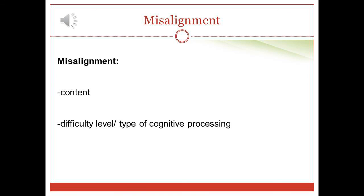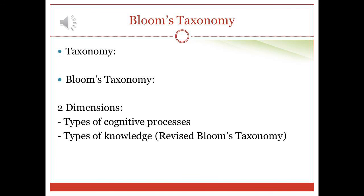Misalignment is the lack of congruence between learning objectives, instructional experiences, and assessment. Misalignment can occur both in the content addressed and in the difficulty level or the type of cognitive processing required for completing a task. For instance, if the objective is to add numbers up to 100, having students count groups of objects on a table would not be appropriate evidence of mastery, because mere counting is a lower-level cognitive skill than adding. Similarly, assessment should not require additional or different knowledge than what was specified in the learning objective and taught in the classroom.